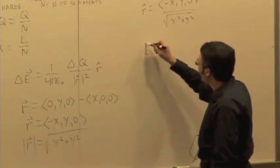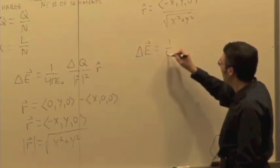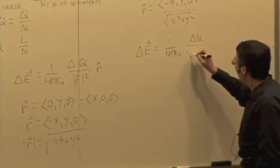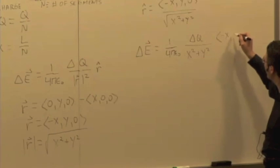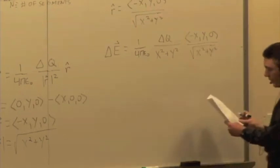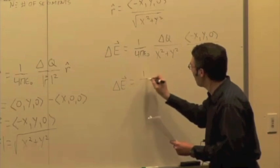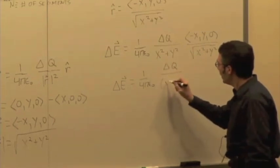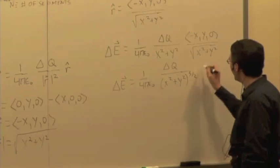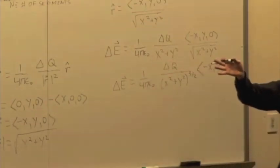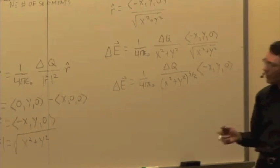So let's plug this back in. We now have delta E equal to one over four pi epsilon zero, times delta Q over (x squared plus y squared), times R-hat, which is (negative x, y, 0) over the square root of x squared plus y squared. Simplifying, we have delta Q over (x squared plus y squared) to the three halves, times the vector (negative x, y, 0). I already know that the x components, when added up, are going to be a net of zero.